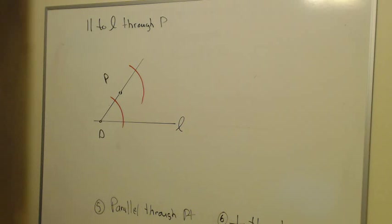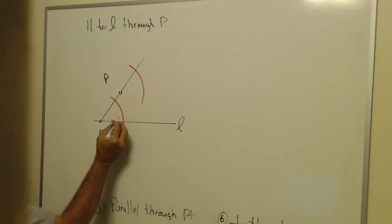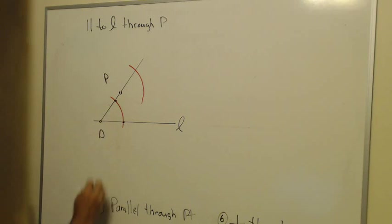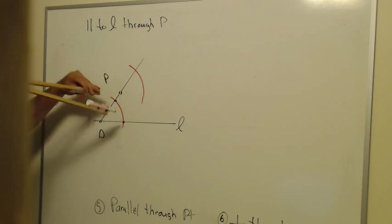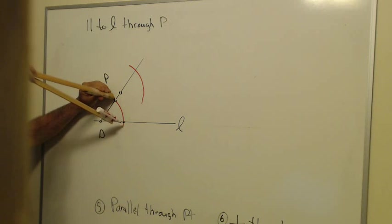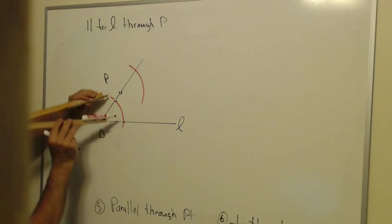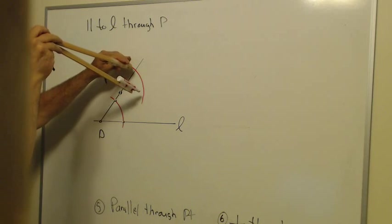Now, like the copy angle procedure, I'm going to see how far it is from here to here going across the angle. So I'll put the pointy end on one end and stretch the pen end to the other, so I'm measuring the distance across. What I want is that distance across to be the same up here.